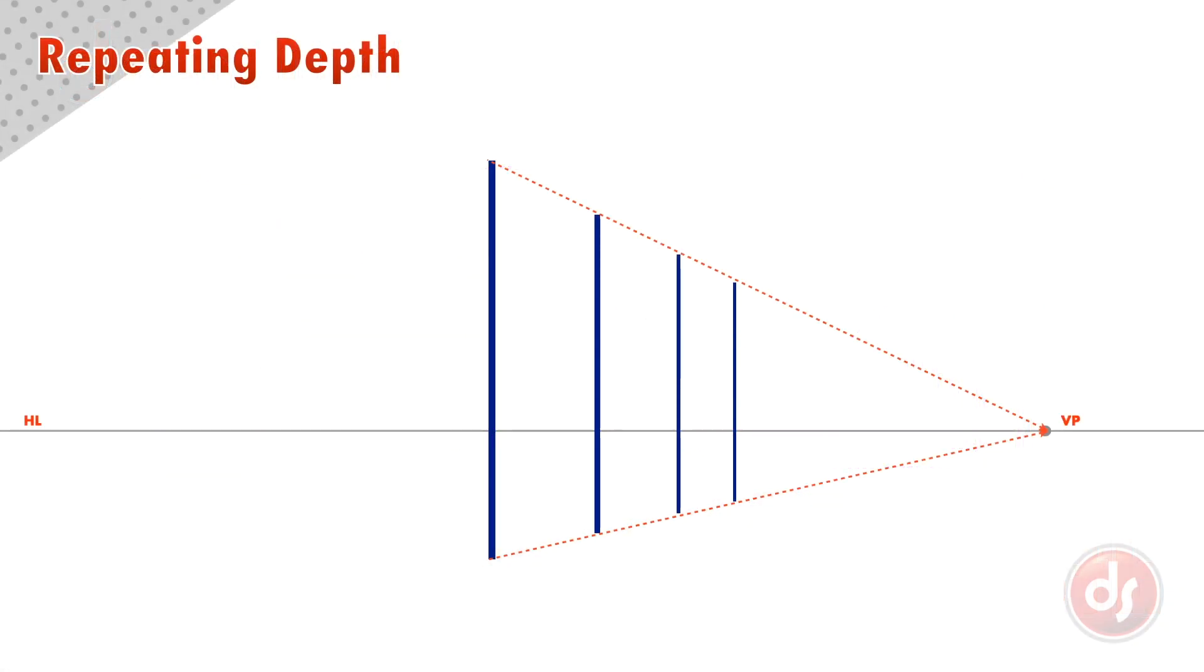In perspective, when objects are repeated in space, the distance between them appears to get smaller the farther away they get.